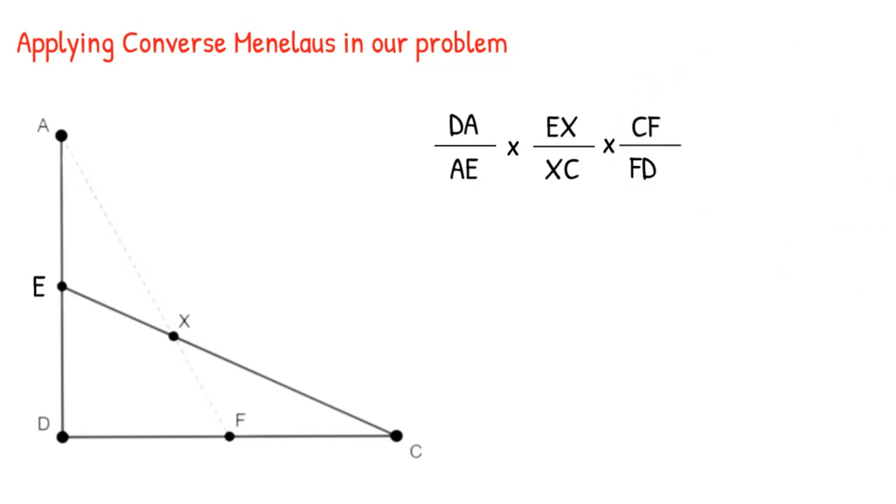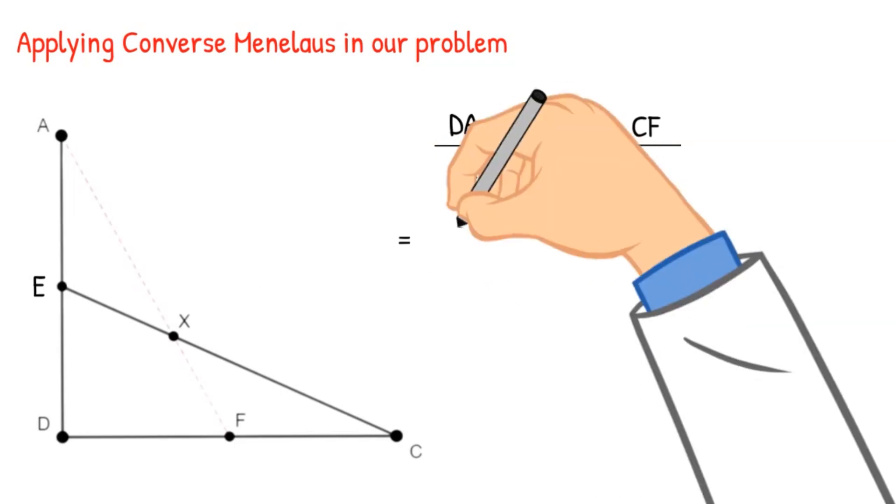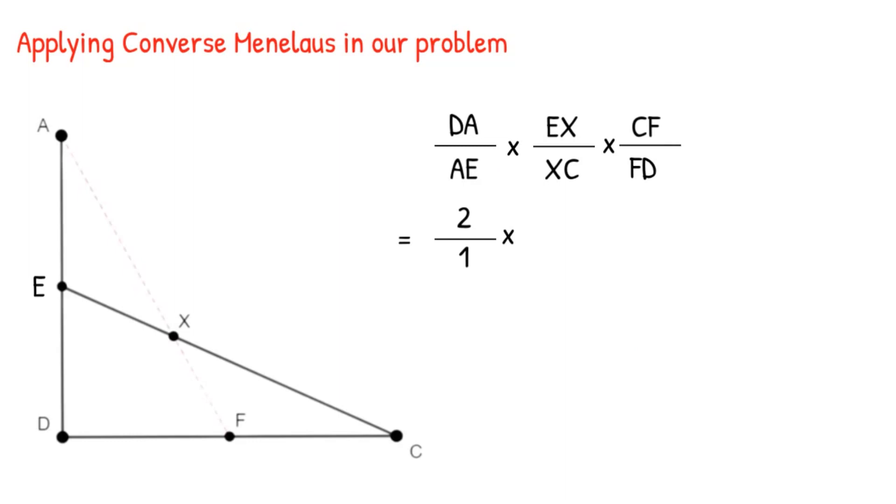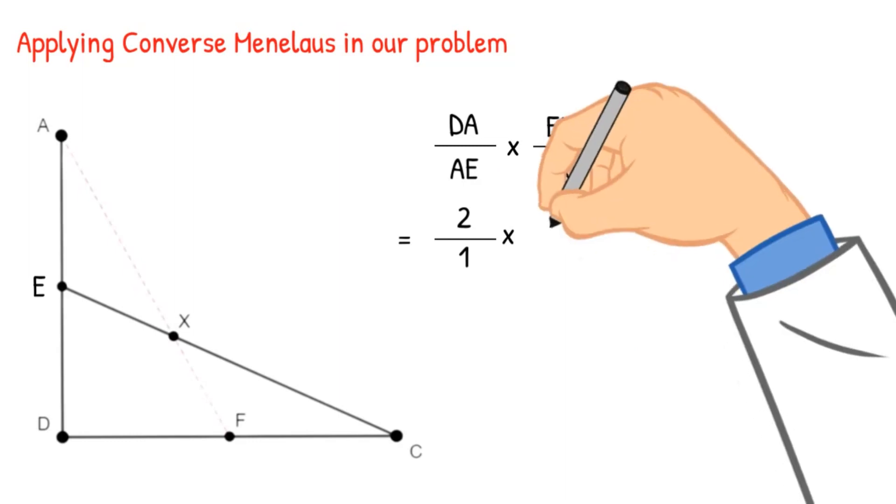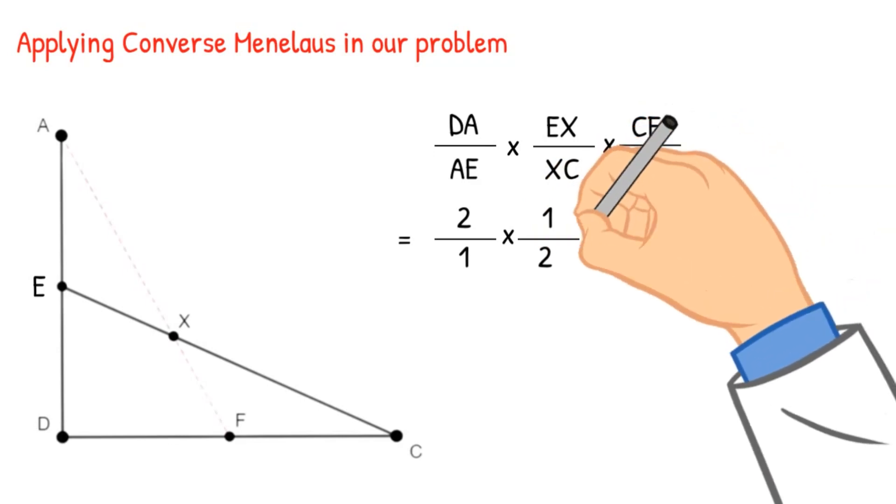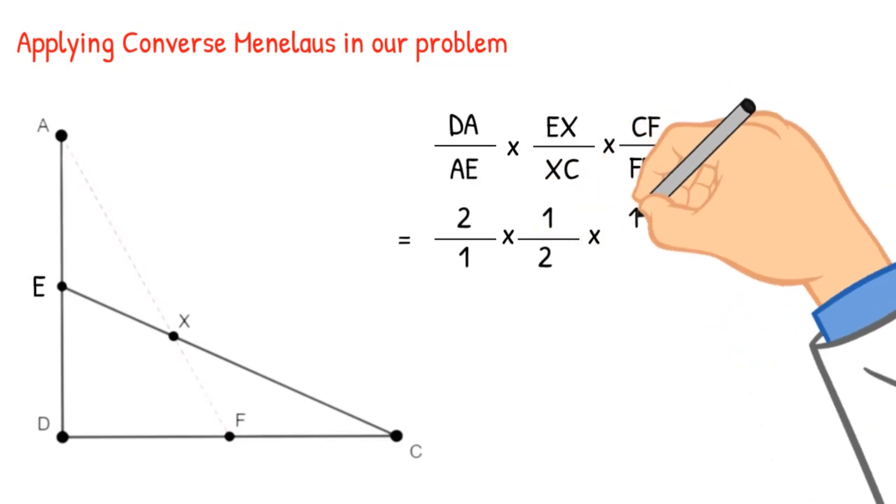Now we know DA by AE has to be 2 by 1. Why? Because E is the midpoint. We already proved that EX by XC is equal to half. Why? Because of the similarity of the triangles.